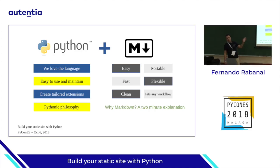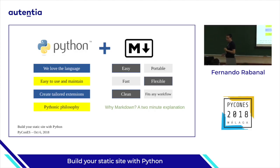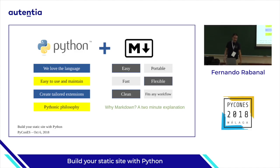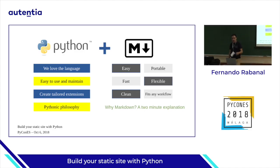So, why Python, why Markdown? There are other platforms for other languages, but why did I choose Python and Markdown? Well, this is a Python conference, so Python could seem a very obvious choice here, but it's actually because we love the language. We are here because we love the language. It's easy to use and maintain. We could create extensions, we could create plugins, we could create everything in Python for those libraries.